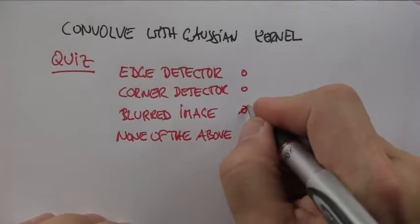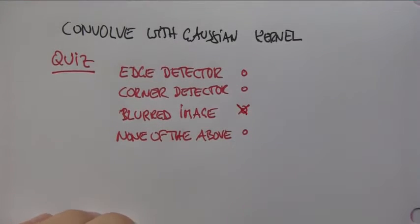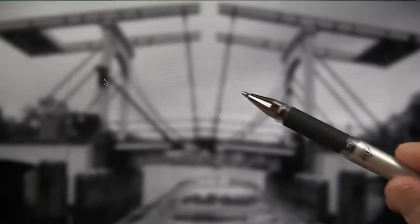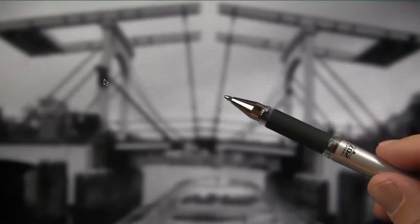The answer is a blurred image. A Gaussian kernel gives us a blurred image. Let me demonstrate this to you. Here is the original image, and this is the result of convolving with a Gaussian. You can see that the features are much blurred.